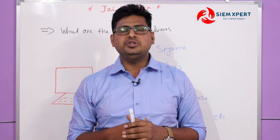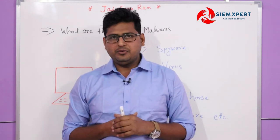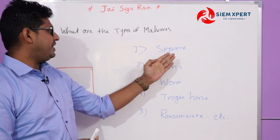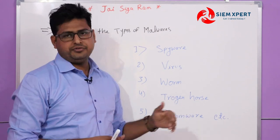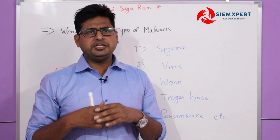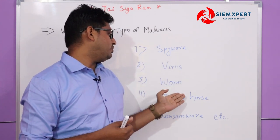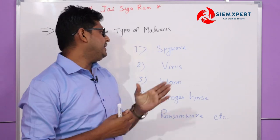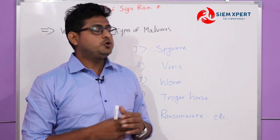Now let's talk about the types of malware. There are many types, such as spyware, virus, worm, Trojan horse, and ransomware. An interviewer can ask what is malware, or specifically what is spyware, what is a virus, or what is a worm — so it's very important to understand each type.